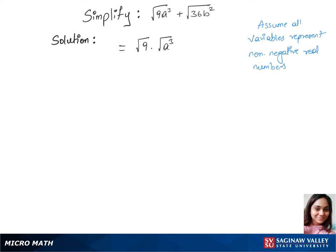In our next step we'll simplify this. You can write root of 9 as root of 3 squared times we'll split a cubed to a squared times a under the root, plus root of 36 as root of 6 squared and this one will keep it the same for now, root of b squared.